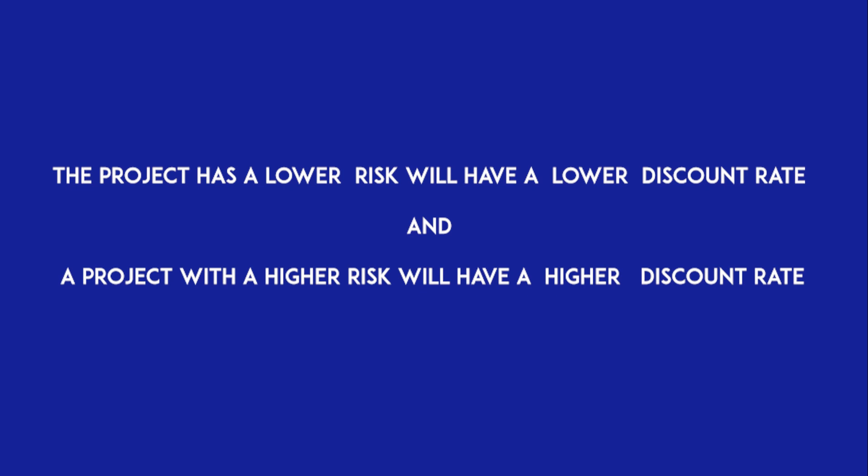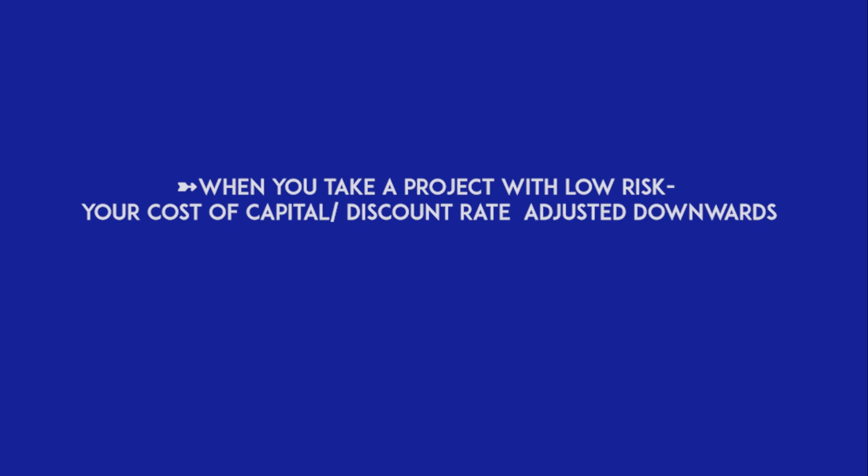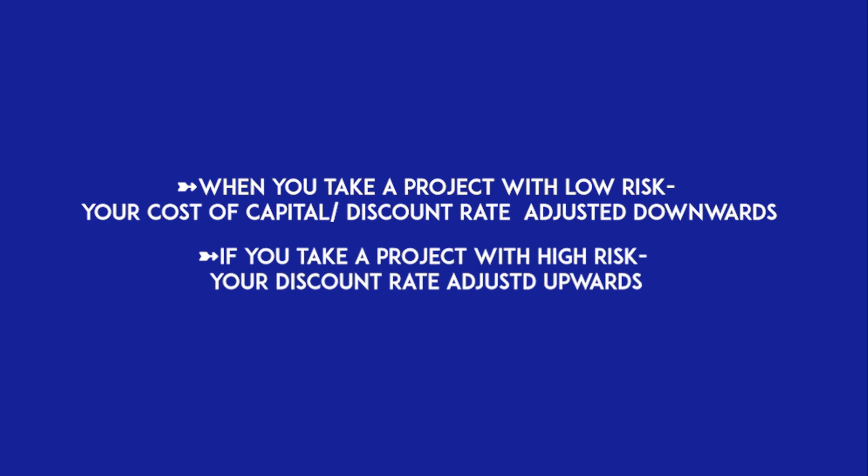A project with lower risk will have a lower discount rate, and a project with higher risk will have a higher discount rate. However, the company's cost of capital does not differentiate between projects with low risk and projects with high risk. So when you take a low-risk project, the discount rate should be adjusted downwards, and for a high-risk project, adjusted upwards.